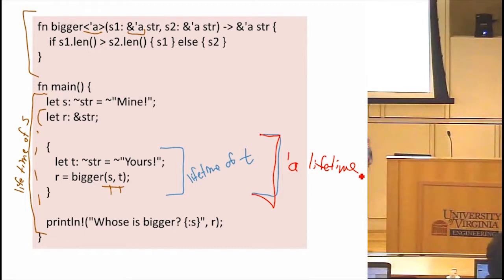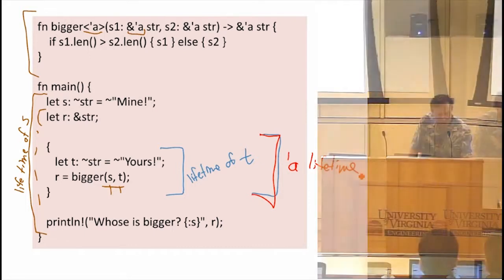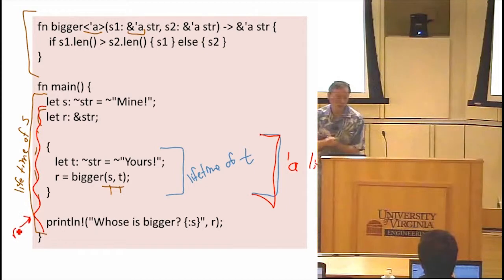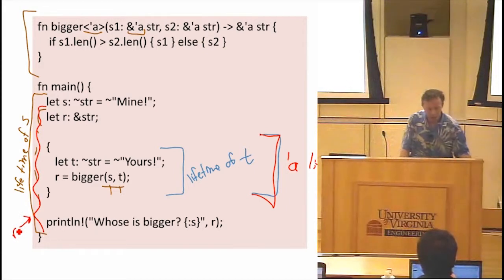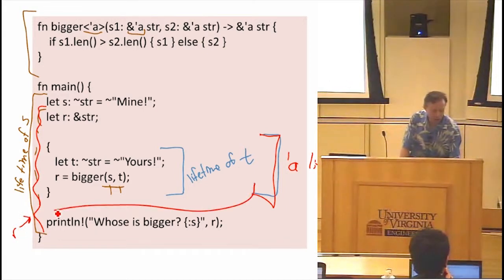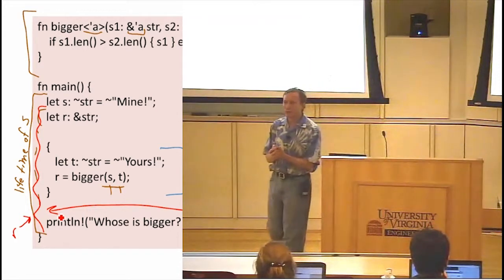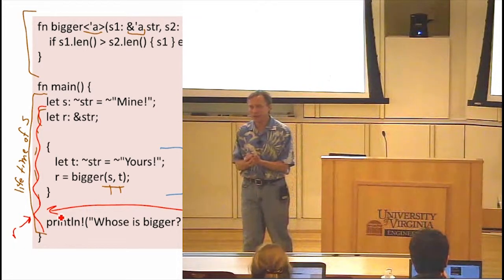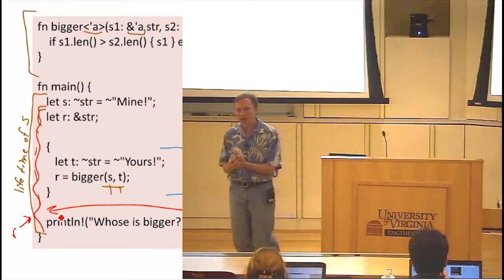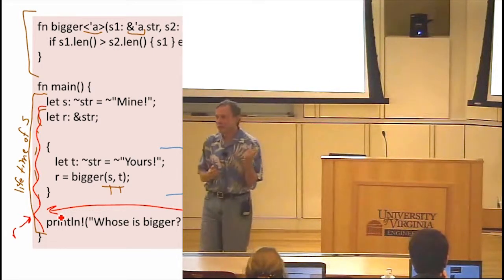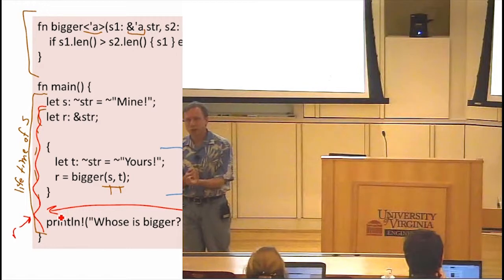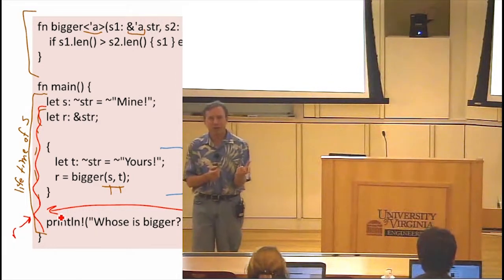So T is introduced here, goes out of scope here. This is the lifetime of T. What is the lifetime of A, the lifetime parameter, going to be? So it's the minimum of those two lifetimes. So this is going to be the lifetime of A. We're assigning the result of bigger to R. What is the lifetime of R? Yeah, so R extends beyond that scope. So this is the lifetime of R. The result from bigger has this lifetime. We're assigning it to something that has that lifetime.